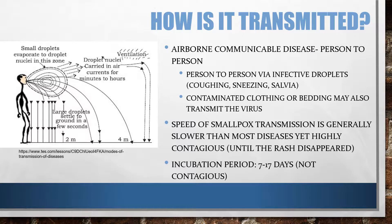How is this disease transmitted? Smallpox is an airborne communicable disease that travels from person to person via infective droplets — through coughing, sneezing, saliva, or any mucous membrane. If a healthy person comes in contact with someone infected and mucus gets on them, it could infect them. Contaminated clothing or bedding may also transmit the virus.